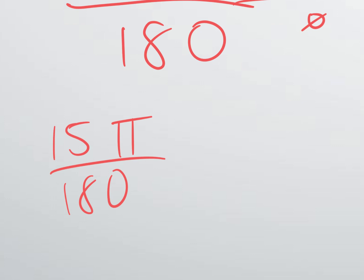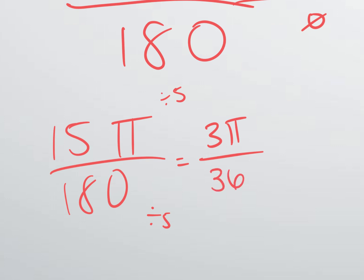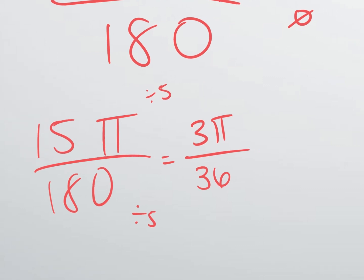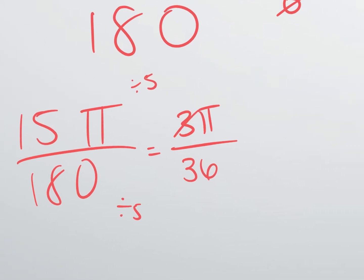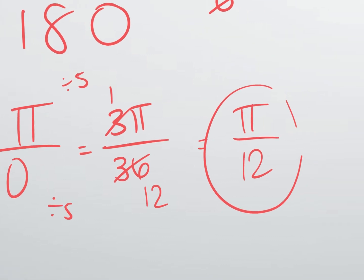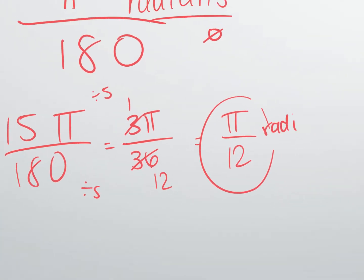Simplify 15π over 180: divide both by 5 to get 3π over 36, then divide both by 3 to get π over 12. So 15 degrees equals π/12 radians. Your radian answer should always have pi in it. Degrees should never have pi in your answer.